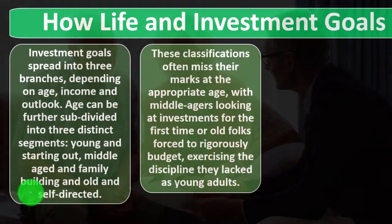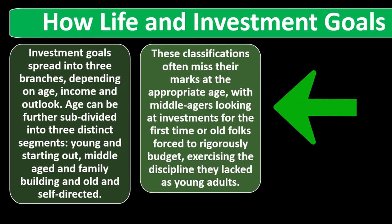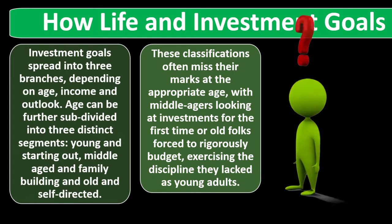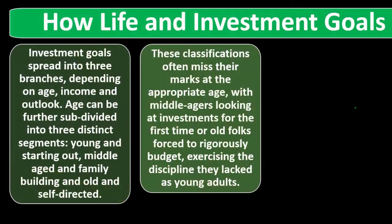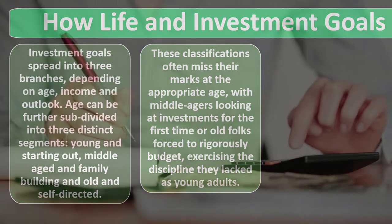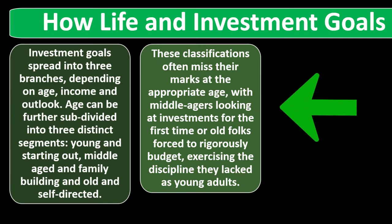You can think about that normal life cycle relationship as at least a baseline guide so we can apply a strategy or start to build upon that baseline for our own personal strategies. These classifications often miss their marks, with middle-agers looking at investments for the first time and older folks forced to budget ridiculously, exercising the discipline they lacked as young adults.